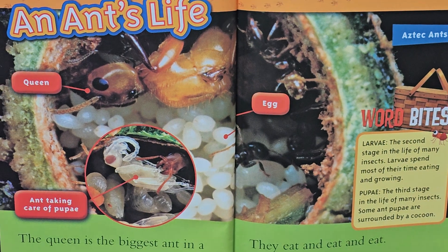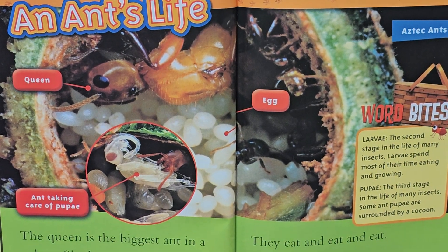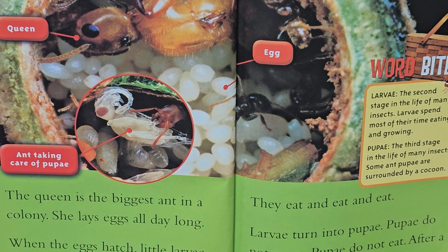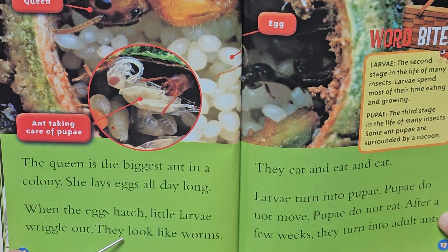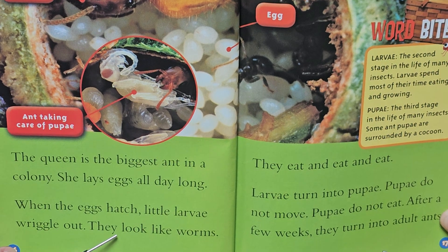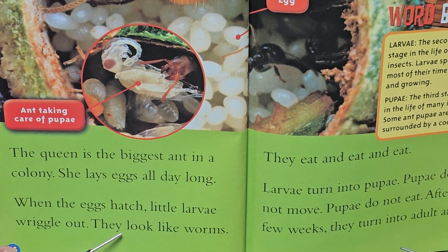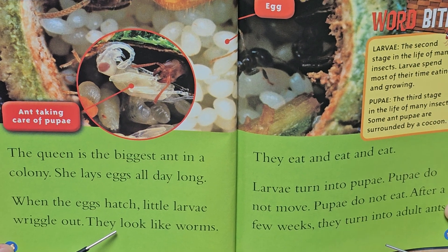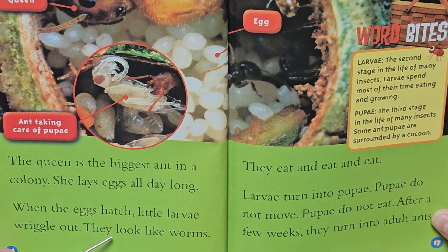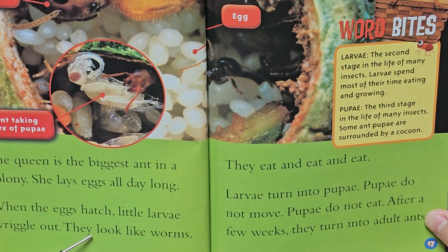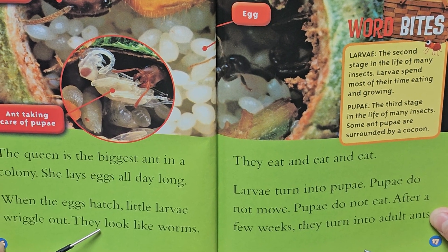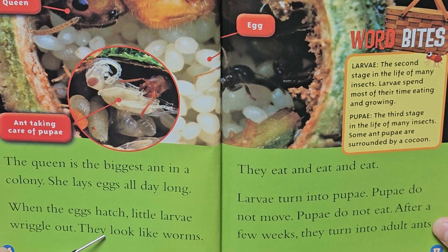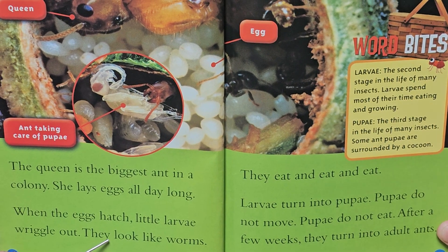An ant's life. The queen is the biggest ant in a colony. She lays eggs all day long. When the eggs hatch, little larvae wriggle out. They look like worms. They eat and eat and eat. The larvae turn into pupae. Pupae do not move. Pupae do not eat. After a few weeks, they turn into other ants.